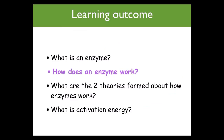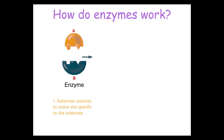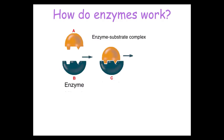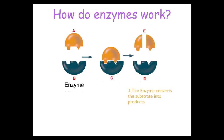Enzymes have an active site that is specific to the substrate. The substrate attaches to the active site, forming an enzyme-substrate complex. The R groups on the amino acids in the active site interact with the substrate, lowering the activation energy so the substrate can break apart into products. The enzyme can also change the pH or apply a mechanical pull on the substrate, making it easier to break apart. The enzyme converts the substrate into products and remains unchanged at the end of the reaction.